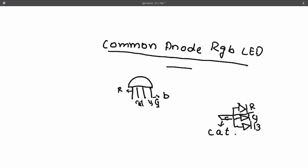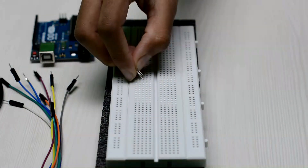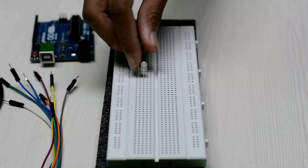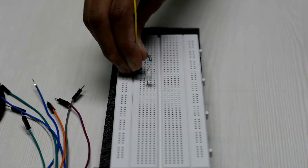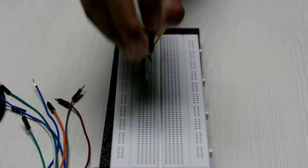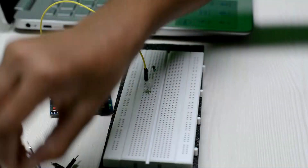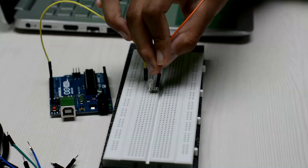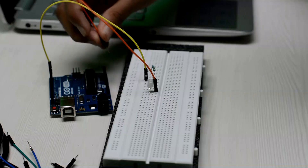Now let's see how to connect them into the circuit and start building it. I am taking the RGB LED and connecting it to random columns. I am taking the 220 ohm resistor and connecting it to the first leg of the RGB LED. I am taking a jumper wire, connecting it to the second leg of the resistor, and connecting the other end to pin number 2. Next I am taking a jumper wire and connecting it to the second leg of the RGB LED, and the other end to the 5 volt power source.